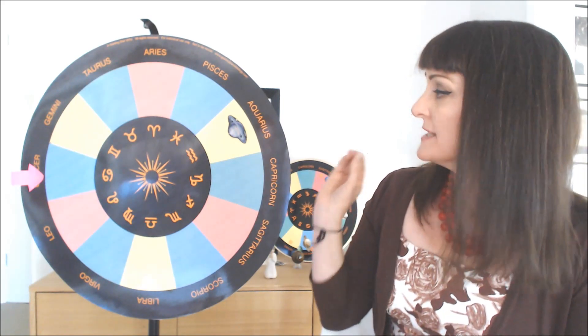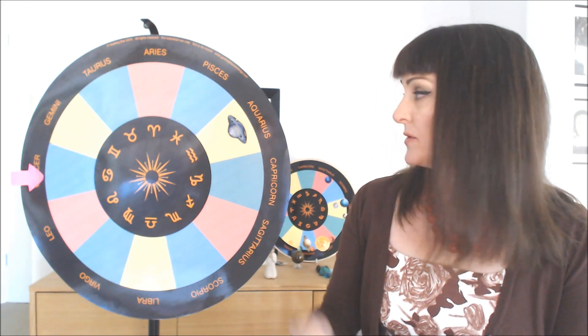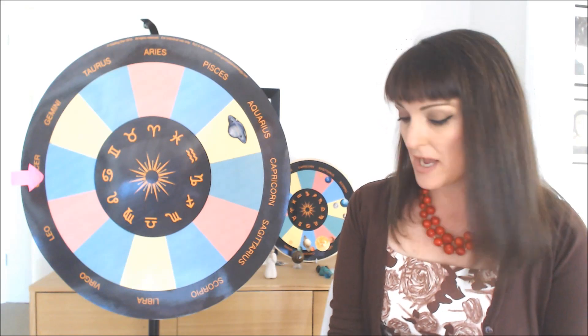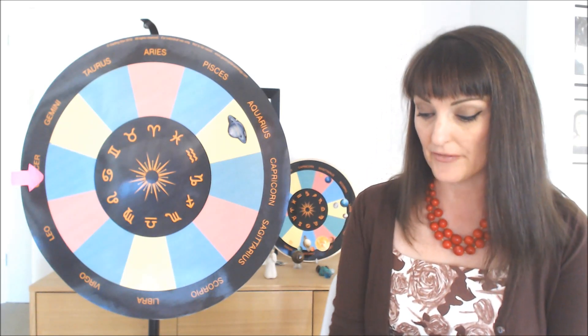Well, Saturn is restriction and blockage. And of course, the eighth house has to do with our desire nature, what we desire, what we want. It's a desire house, a kama house. It also is a house of personal power. So we can expect that during this two and a half year to three years transit, there's going to be a restriction and a blockage of those things in our life.